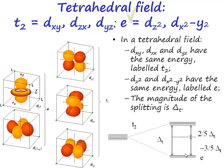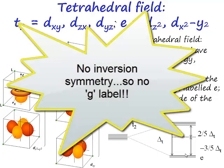In a tetrahedral field, if you have a tetrahedral arrangement of ligands, there's no inversion symmetry. So another trap that students tend to fall into is to label it always as T2G, always as EG. Remember what the G stands for—it's referring to the fact that you can have inversion symmetry. That doesn't apply in a tetrahedral environment, and so we don't have it.